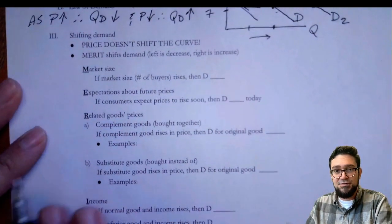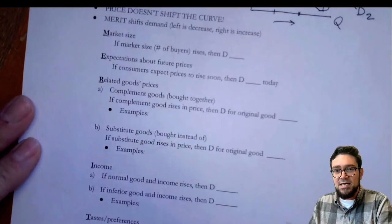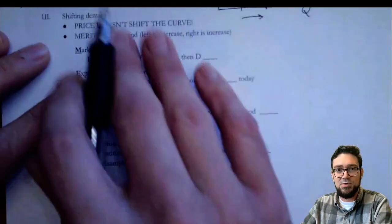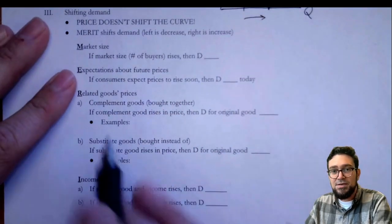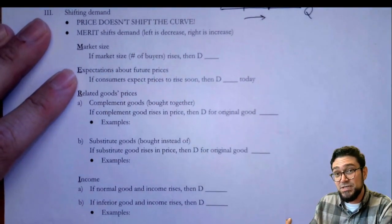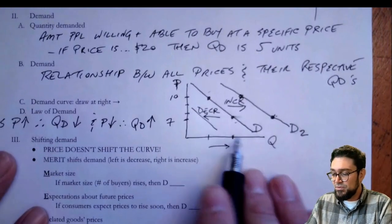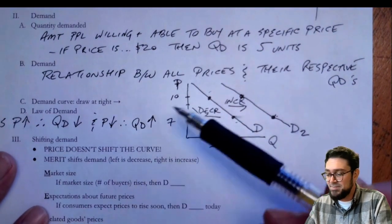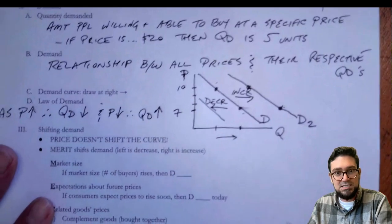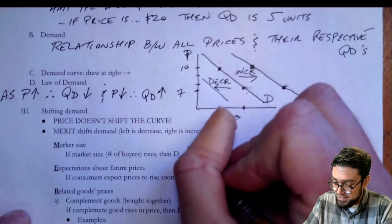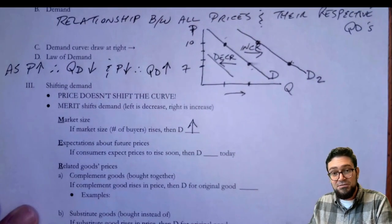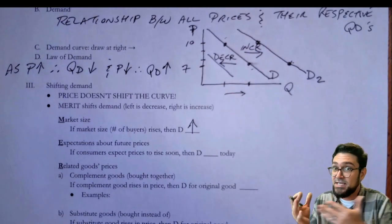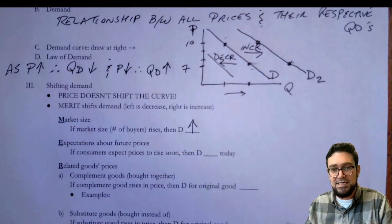The first thing that shifts demand is market size — the number of buyers. If the market size increases, there are twice as many people willing to buy at every single price, regardless of whether the price is $10 or $7. So we would say demand increases. And the opposite is also true: if there are half the number of buyers, then there's half the demand.